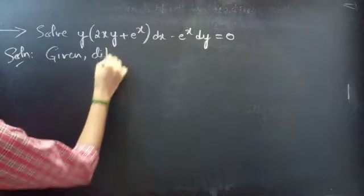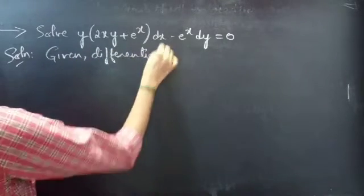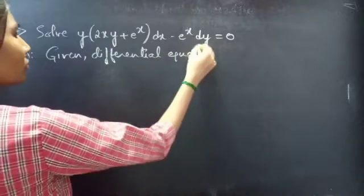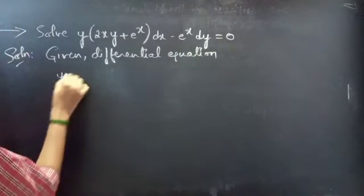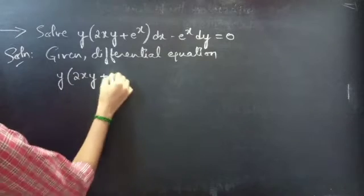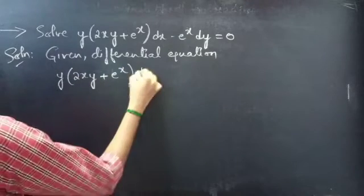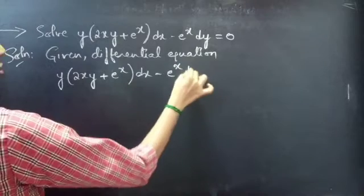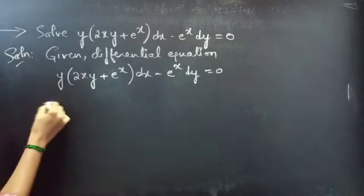Given differential equation: y times (2xy plus e^x) into dx minus e^x into dy equals to 0.